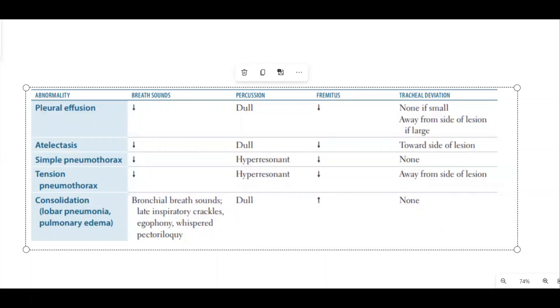This table shows some high yield findings related to respiratory pathologies. First is pleural effusion. In pleural effusion, everything goes down: breath sound decreases, vocal fremitus decreases, and percussion is dull on chest examination.